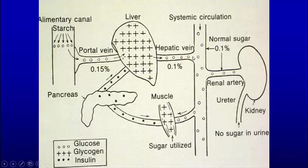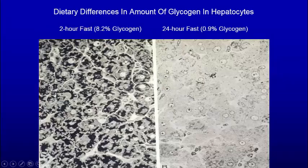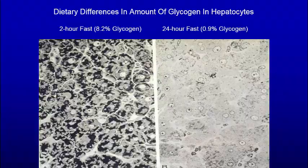The pancreas produces insulin to cause cells to pick up glucose. So it's important for the liver to pick up glucose and store glycogen. Glycogen is also stored in muscle with very little sugar — almost no sugar coming out in the urine; you don't want to lose the sugar you have. Here we see cells stained for carbohydrates — this is a given cell with its nucleus and nucleolus, and all these globular things are the stored glycogen. With a two-hour fast, eight percent of the cell is composed of glycogen. In contrast, with a 24-hour fast, you have less than one percent glycogen — there's a breakdown of glycogen over the period of fasting, and that's how the liver maintains normal glucose levels between meals.